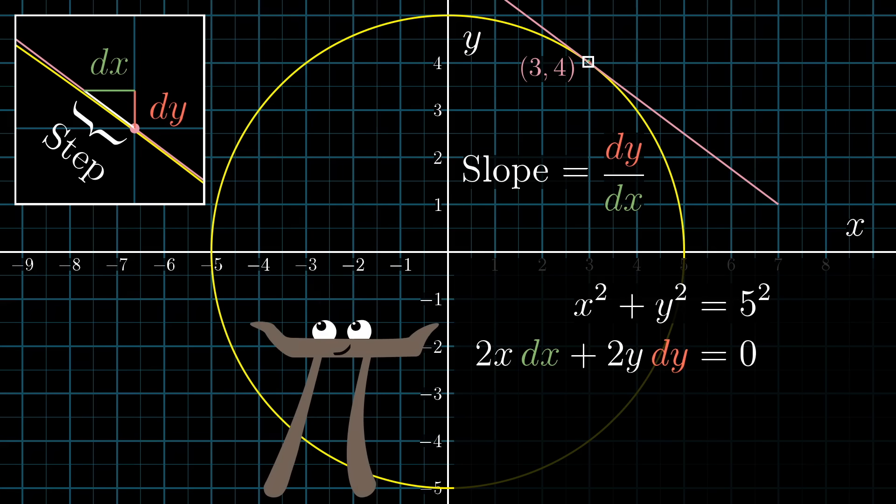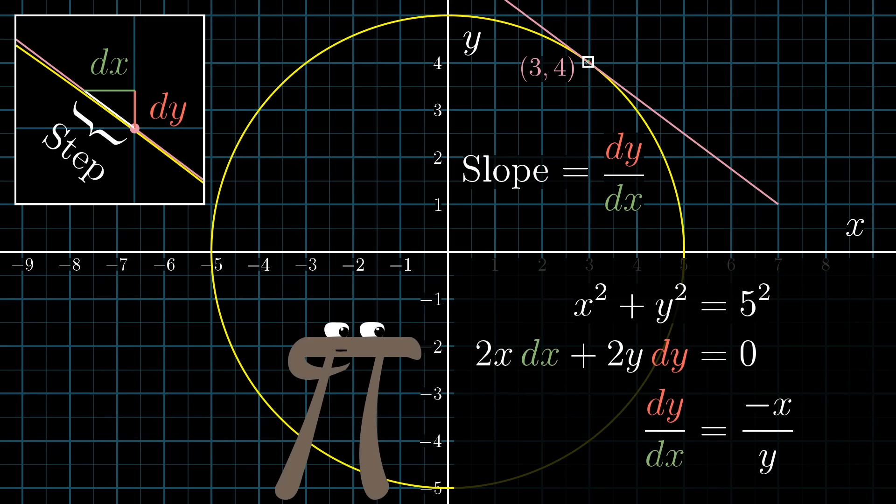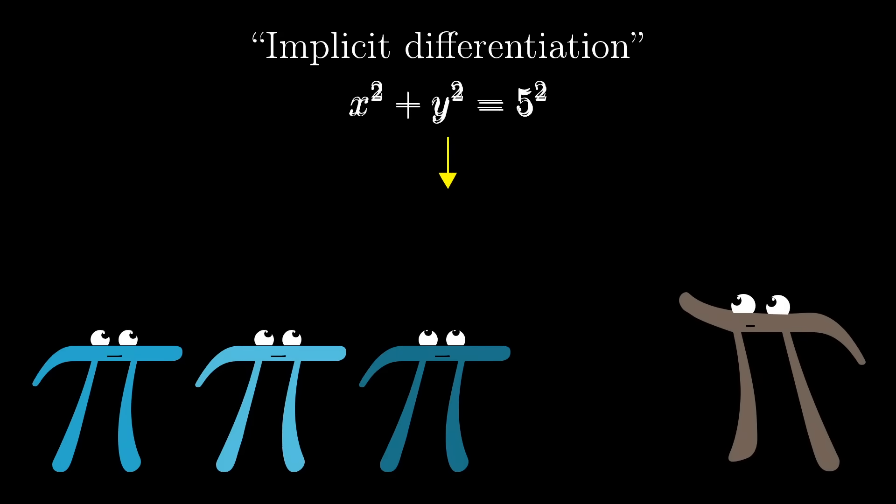But if you just blindly move forward with what you get, you can rearrange this equation and find an expression for dy divided by dx, which in this case comes out to be -x divided by y. So at the point with coordinates (x,y) = (3,4), that slope would be -3 divided by 4. Evidently. This strange process is called implicit differentiation.